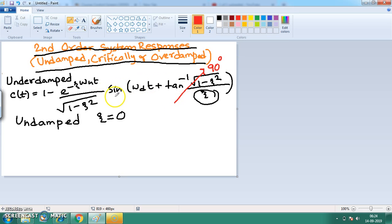And if we think of 90 degrees plus sin omega d t, we can write it as cos omega d t. Here also, the value of zeta is equal to zero, so this expression becomes 1. So the final expression for undamped system is 1 minus cos omega d t.